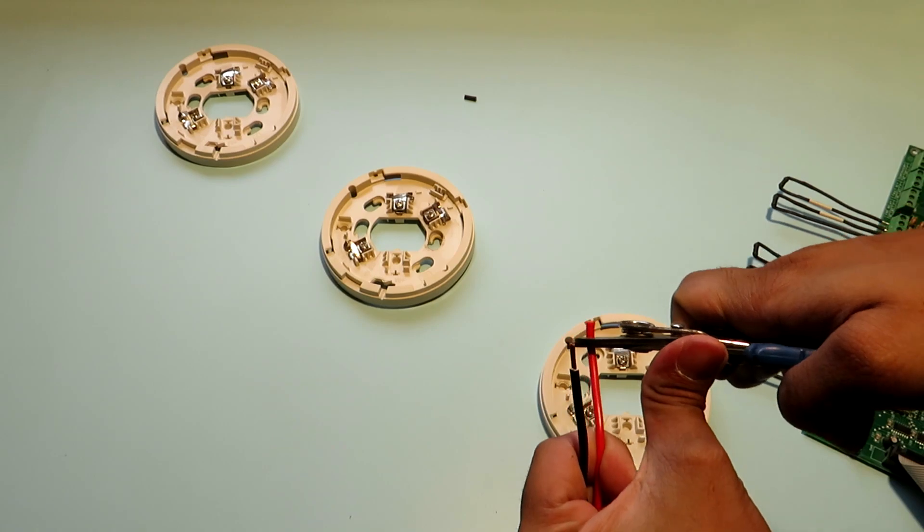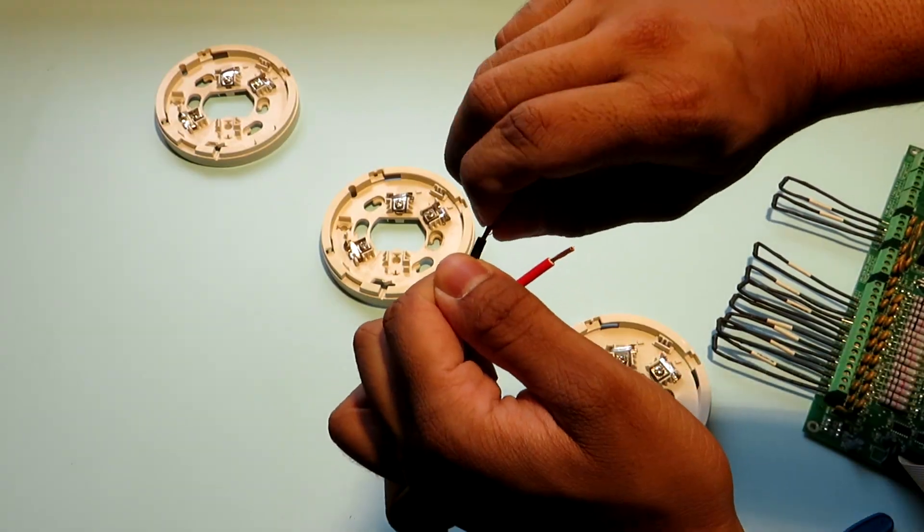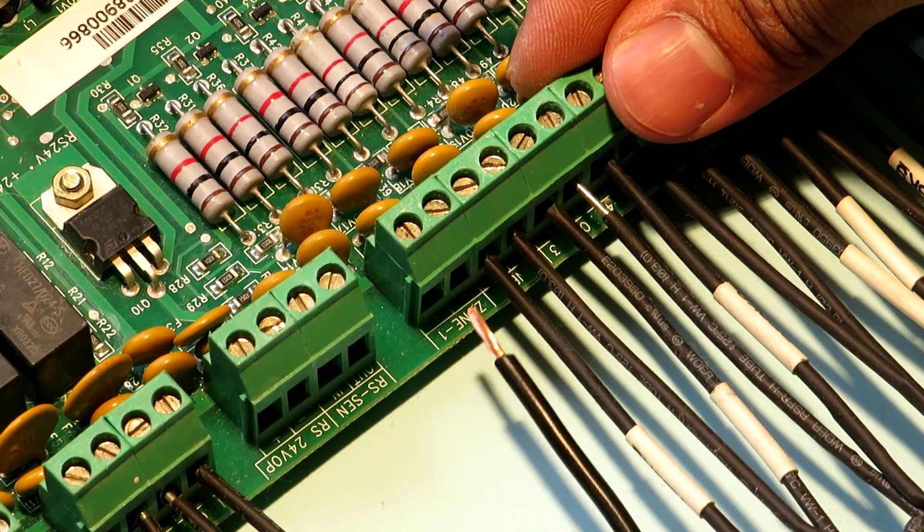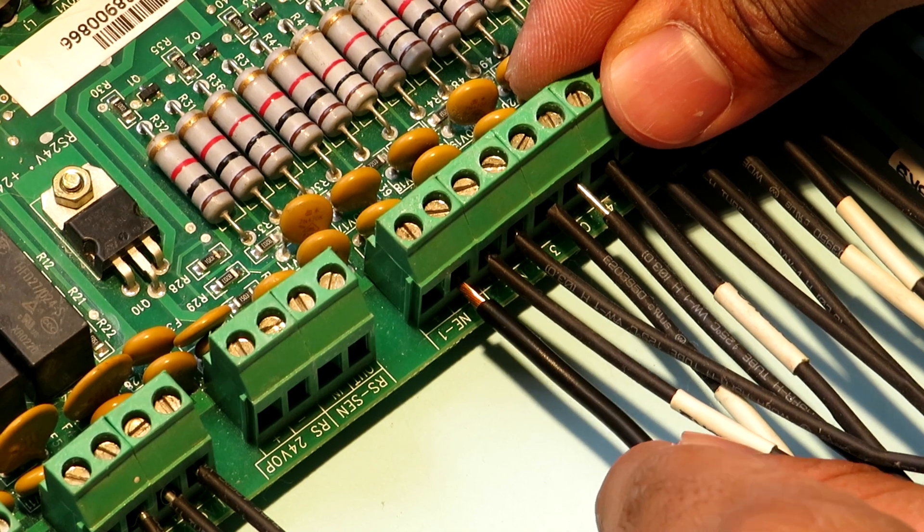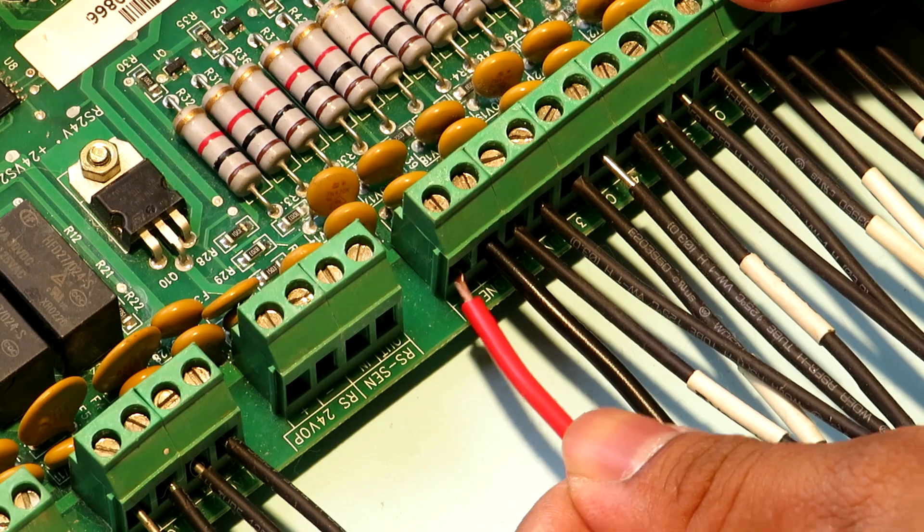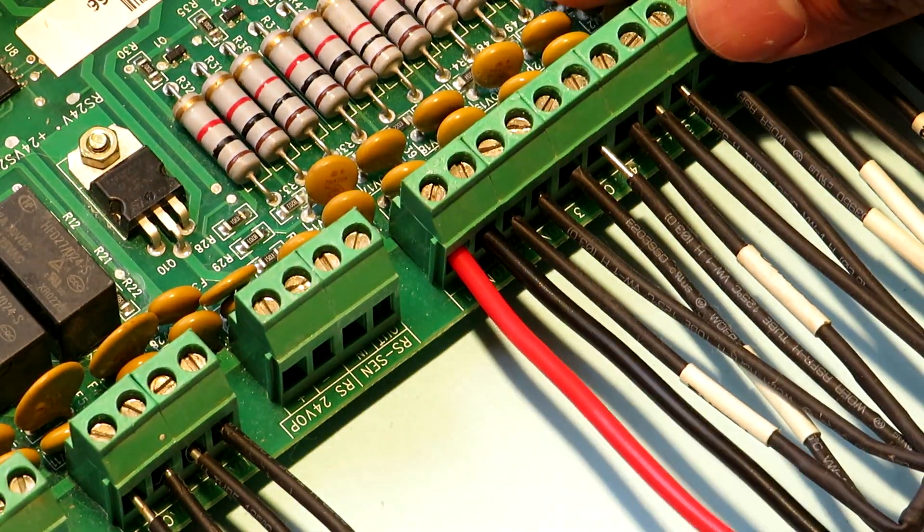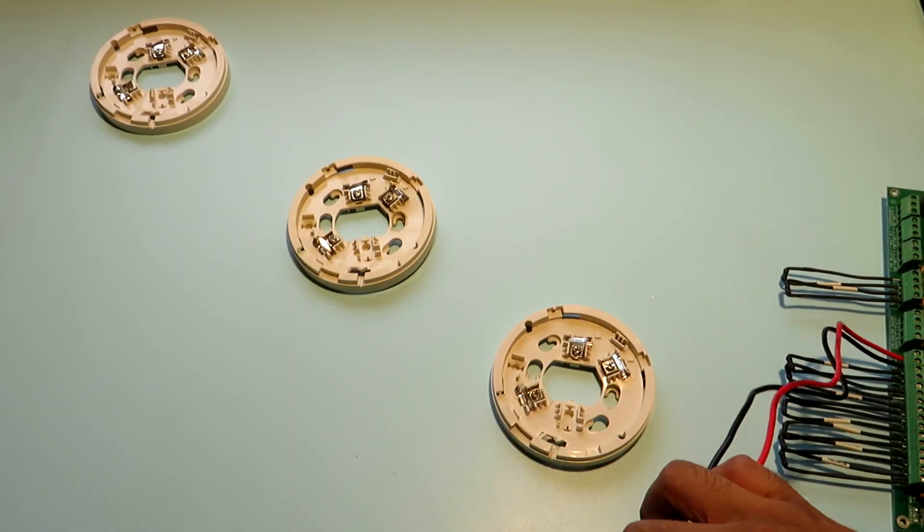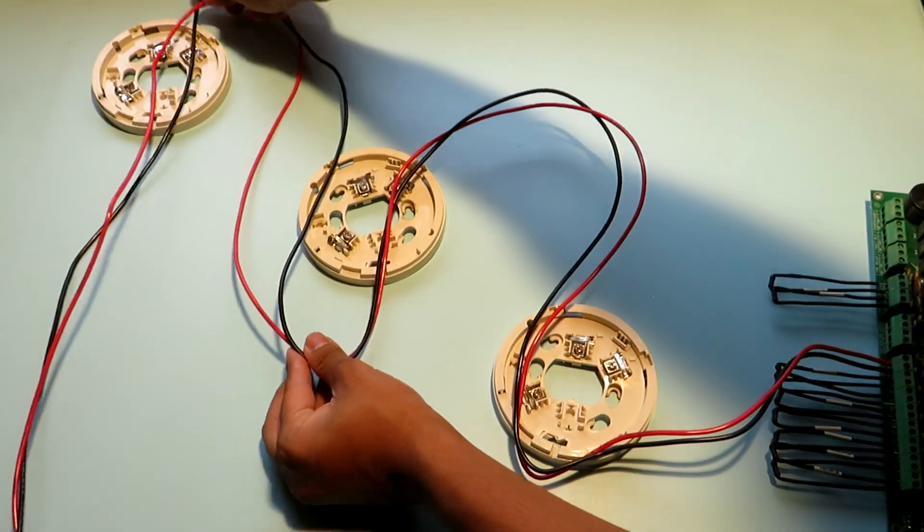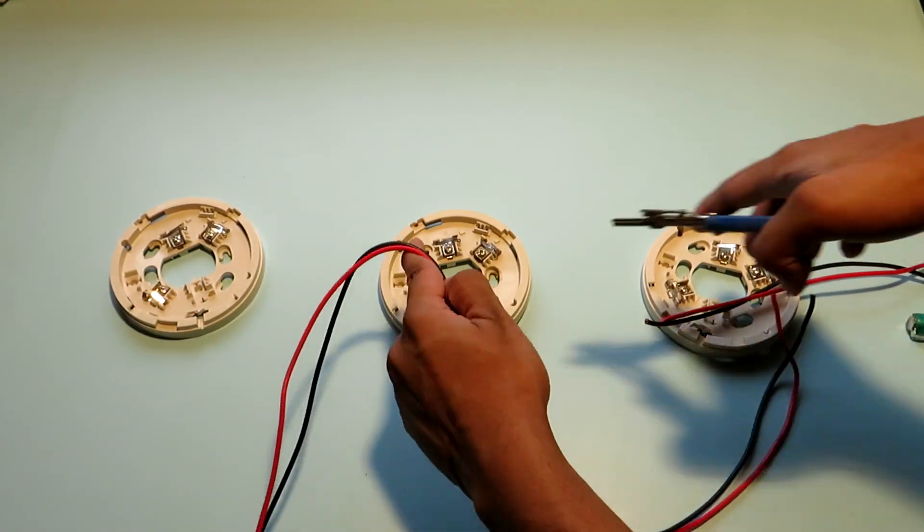So this is our positive and negative wire which will be connected to the zone input in our fire alarm control panel. Please ensure that you maintain correct polarity because this is not AC this is DC at 20 volts. That is the general voltage of smoke detectors. So this is a rough layout of how the wiring will go. We'll now cut the wires in these lengths so that we can make the connections.